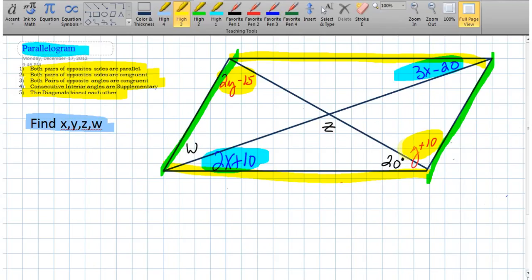So we can use that information to set those expressions equal to find x and y. Let's try to do that over here. So we've got 2x plus 10 equals 3x minus 20. And if we solve for x, it looks like x turns out to be 30.